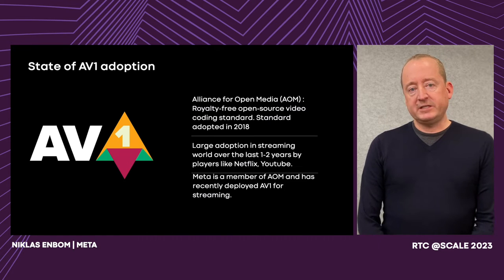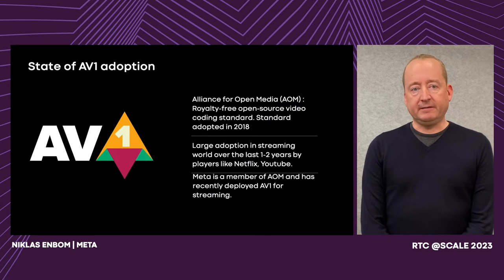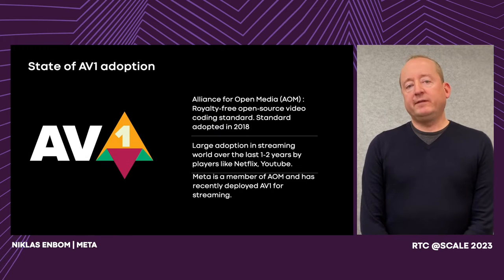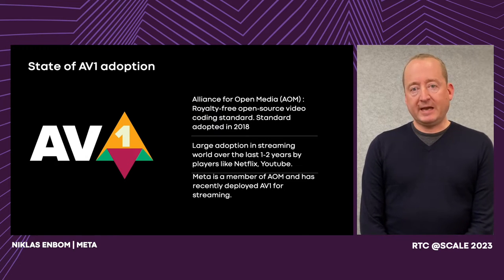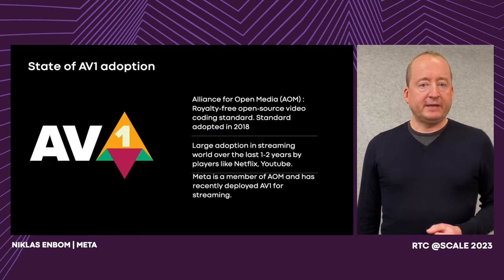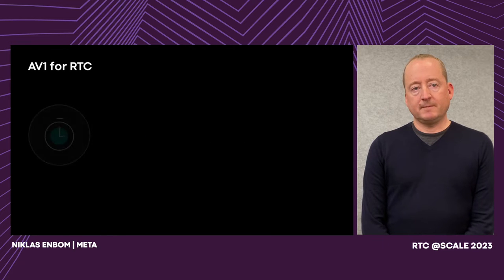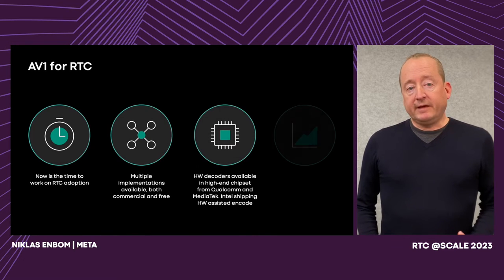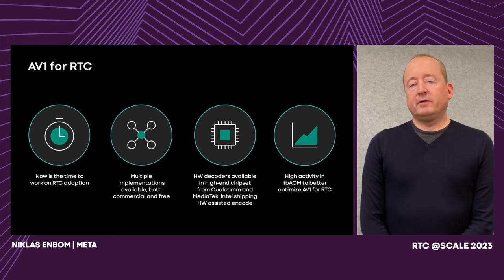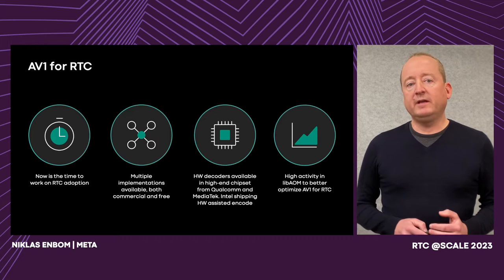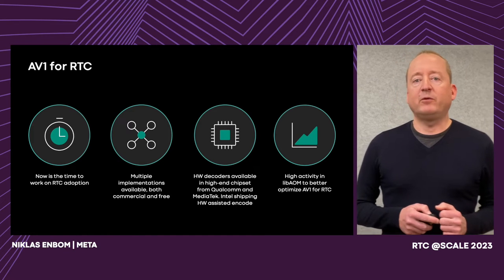AV1 — the first specification was standardized by Alliance for Open Media back in 2018. After that, development implementations have progressed and the codec has recently been deployed at large scale for streaming services with companies like YouTube, Netflix, and also Meta through Instagram and Facebook Reels. For the Meta video streaming use case, there's actually a detailed blog post on the Meta engineering blog that covers that work in detail and also gives good examples on the quality gains and bitrate savings they were able to achieve.